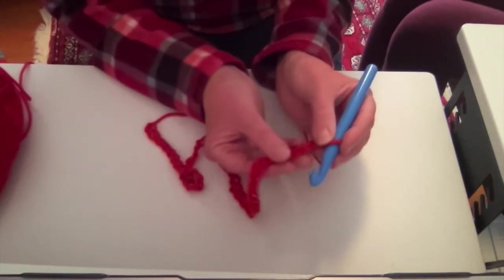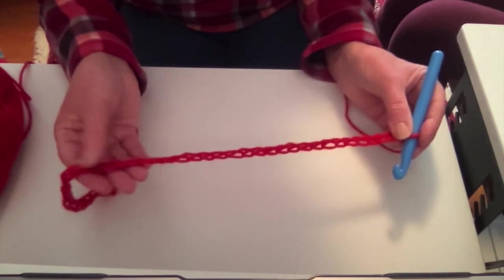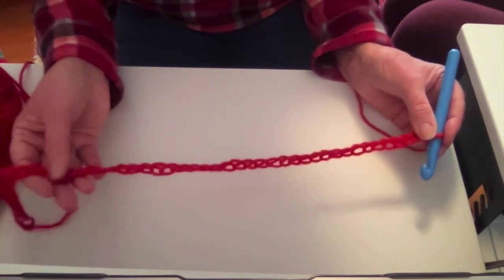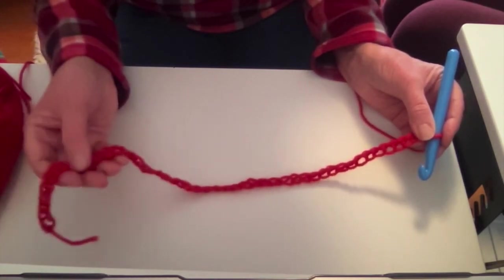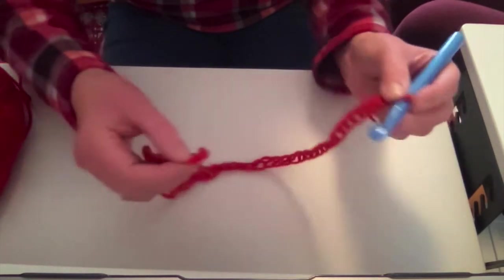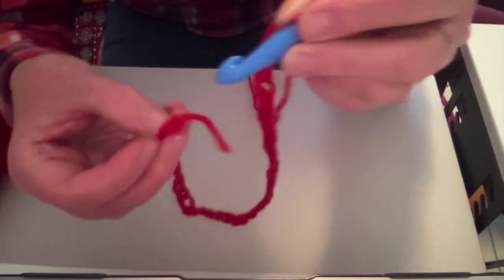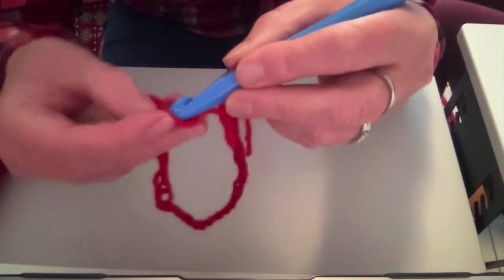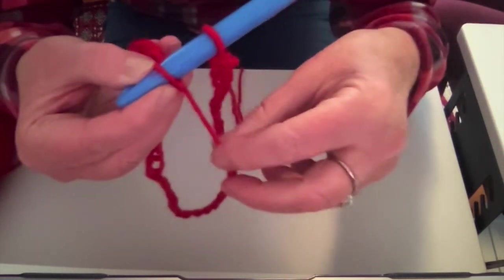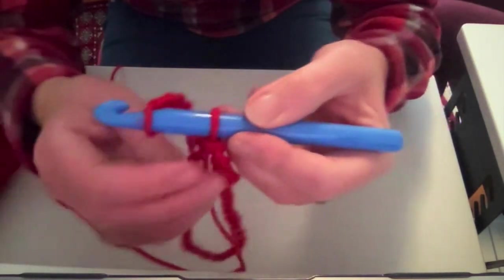Now, to start going around in a circle, make sure this is flat, not twisted. Just pull it out and go to the very end where your tail is. And take your hook and find the first loop and stick your hook in the first loop. Notice this is still attached here. This is your tail. This is your tail. And this is your yarn.